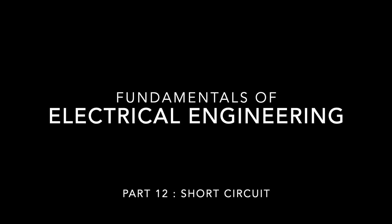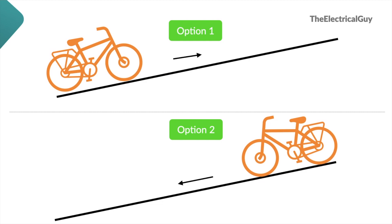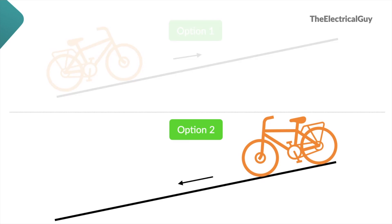Before we understand what a short circuit is, let's first understand a very basic thing about current. Let's say you have a bicycle and you have two options to drive. Option 1 is a steep road where you need to pedal a lot, and option 2 is a very easy road where you don't need to pedal at all. Of course the bicycle would go easily on option 2 — and that's what we will choose.